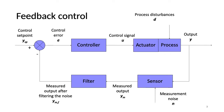First we talk about feedback control. The schematic diagram shows a feedback control loop and it has four main blocks: process, sensor, filter and controller. These four blocks connected together form a control loop or feedback loop. This is a closed loop control, also called automatic control.